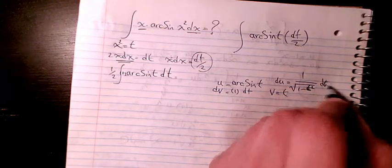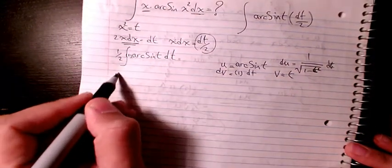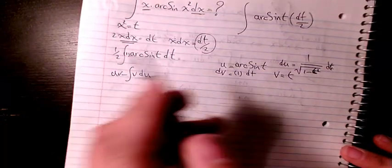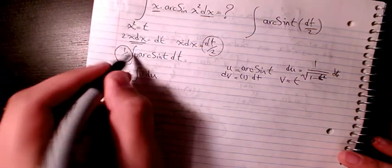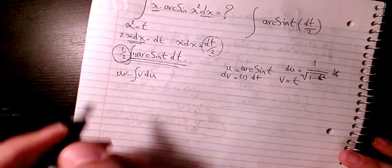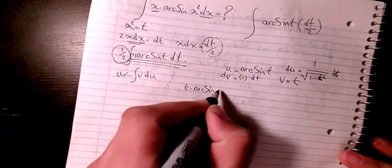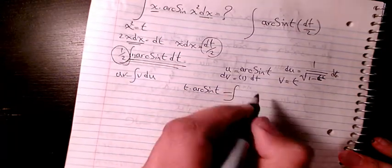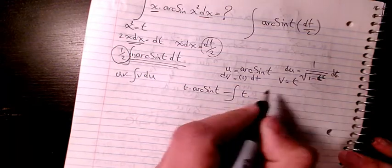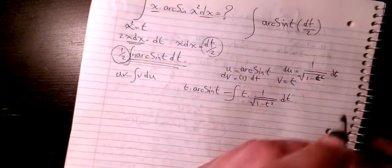So then I have uv minus the integral of v du. The integration by parts is going to be u times v, which is t times arcsin(t), minus the integral of v times du, which is t times 1 over square root of 1 minus t² dt.